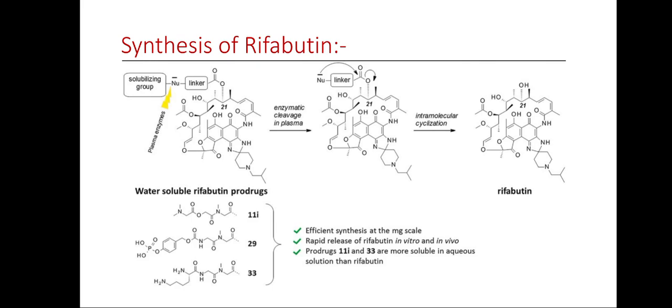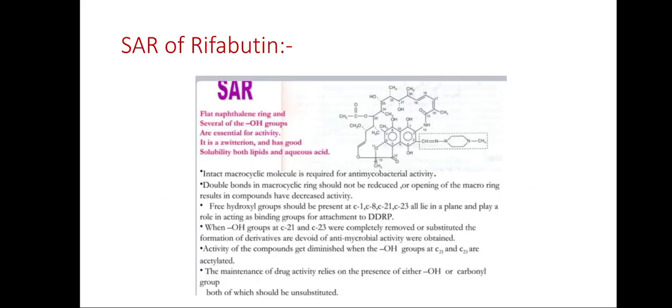Synthesis of rifabutin is given below. Structure-activity relationship (SAR) of rifabutin: The flat naphthalene ring and several of the OH groups are essential for activity. It is a zwitterion and has good solubility in both lipids and aqueous acid. The intact macrocyclic molecule is required for antimycobacterial activity.